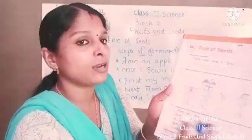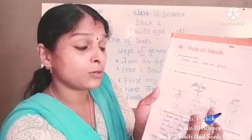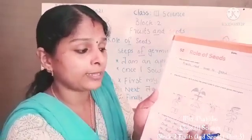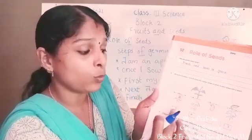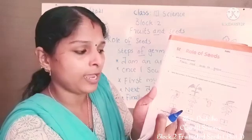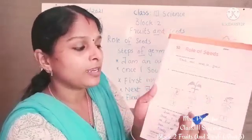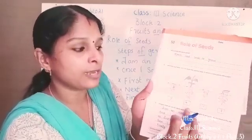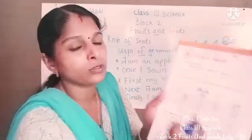Which comes first? First it is a seed — put number 1. Then roots come out — that is second. Then the sprouted seed is third. Finally it grows into a new plant — that is the fourth step. So order them first, second, third, and fourth.